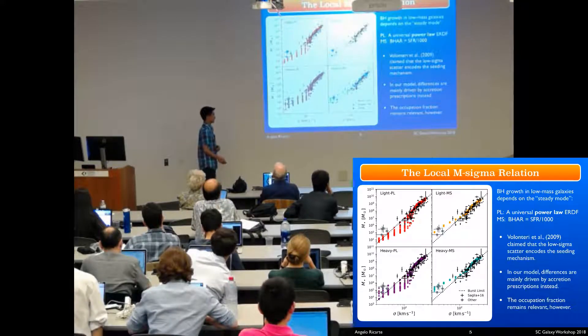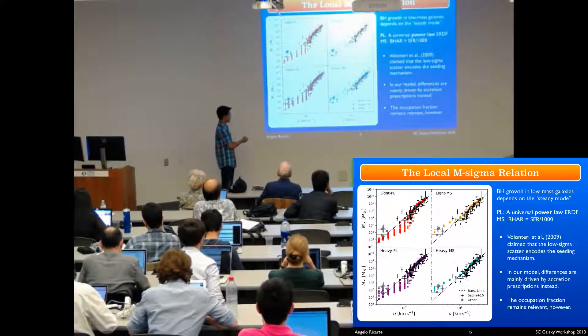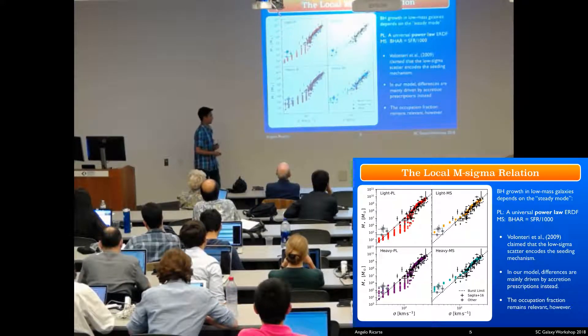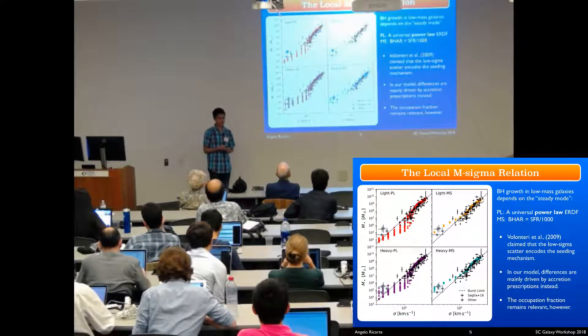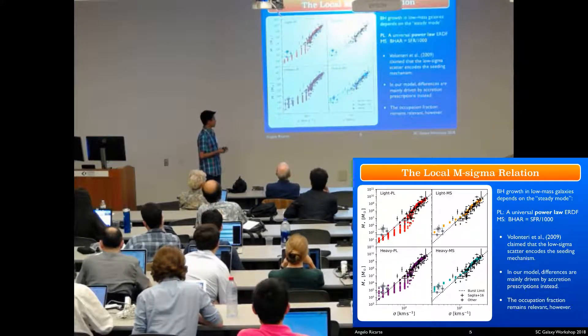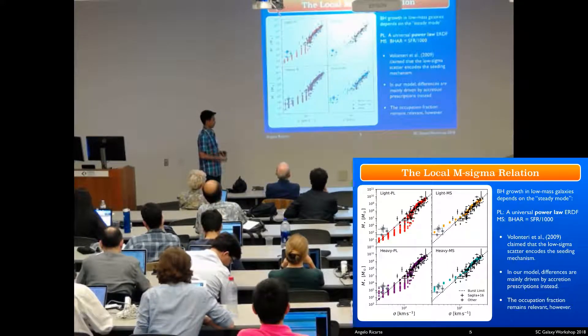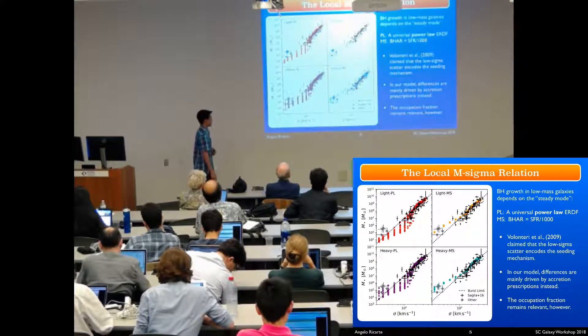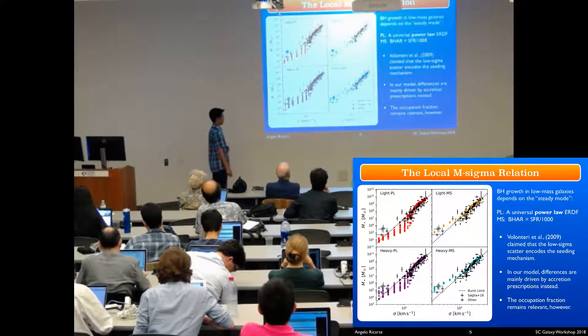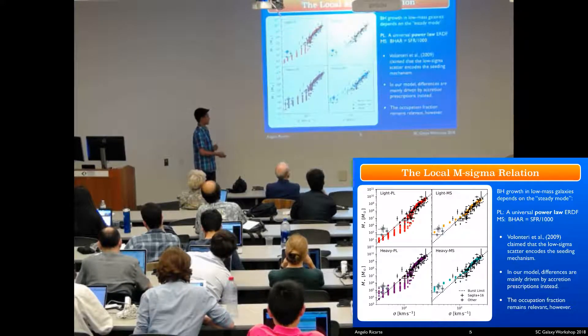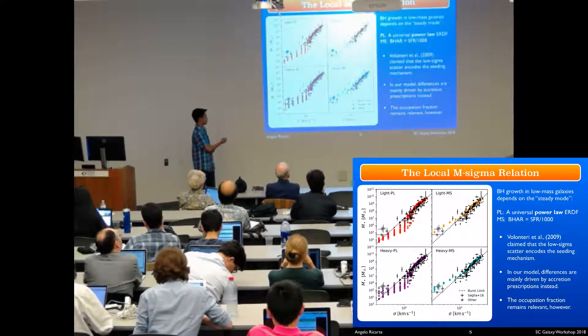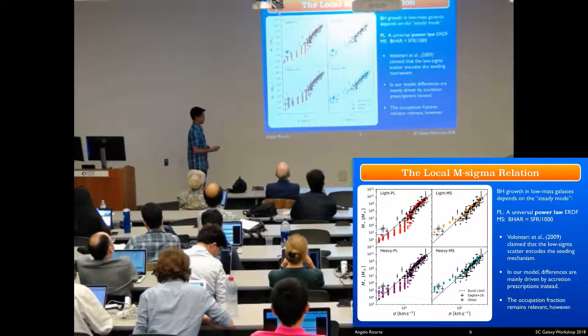Previous models, Volonteri et al. 2009, claim that the low sigma scatter, low mass, low sigma scatter may encode the seeding mechanism, where the heavy seeds have a higher scatter at this end than the light seeds. We don't see such a clear picture in our model. Here we find that the differences are mainly driven by the uncertainties in the accretion prescription. You change the accretion model that dominates at the low mass end, you'll change whatever scatter you get at that end as well.